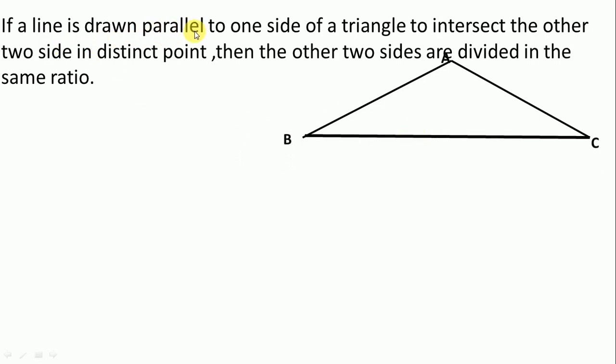Then a line drawn parallel - draw a line parallel here. Name as DE. The first step of theorem is data. In data we write what you see in this figure: a triangle is there, ABC, and one line is parallel to BC. So write this in data: In triangle ABC, DE is parallel to BC.